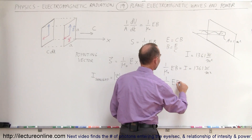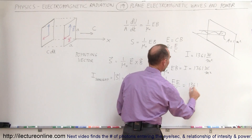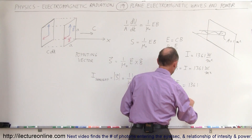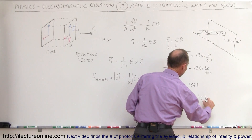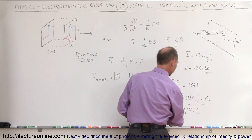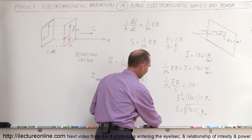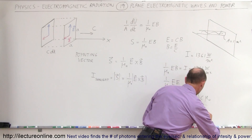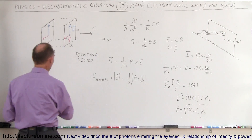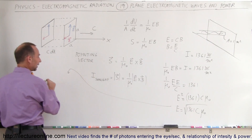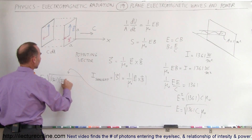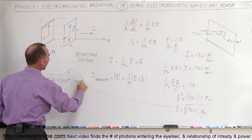Replacing B with E divided by C, we have: 1 over mu sub naught times E times (E divided by C) equals 1,361. Moving mu sub naught and C to the other side gives E squared equals 1,361 times C times mu sub naught. Therefore, E equals the square root of 1,361 times C times mu sub naught. Remember C is 3 times 10 to the 8, and mu sub naught is 4 pi times 10 to the minus 7.